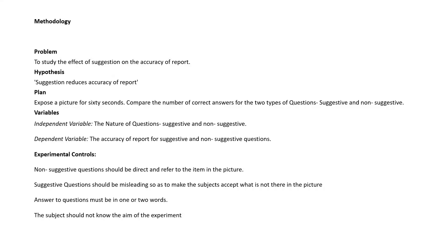The answers expected for both non-suggestive and suggestive questions are very narrow and very specific — either one word or two words. This makes the non-suggestive questions distinct from suggestive questions and gives the experiment more accurate results. The most important experimental control is that the subject should not know the aim of the experiment, because if the subject already knows what you are trying to study, that can affect their responses.